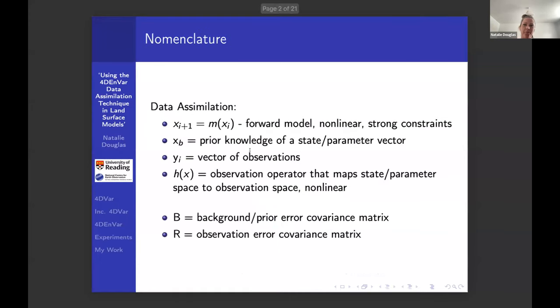I know there's probably a lot of DA experts here, but since I'm the first one, it can't hurt to have a little overview. In DA, we're essentially combining two sources of information: background information for a state, which could be either a state vector or a parameter vector, and then some observations at different times. We have a forward model which takes us from one state at time i to the next time.